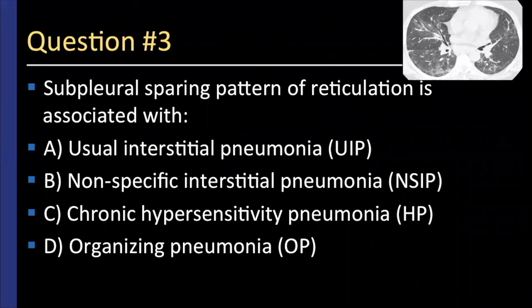For junior residents this may not be an easy question, but give it a shot. A subpleural sparing pattern of reticulation is associated with which of the following conditions? This is a feature of nonspecific interstitial pneumonia (NSIP), and you'll hear more about this in the upcoming lectures.